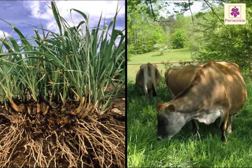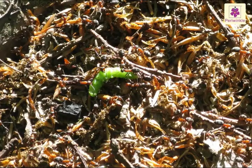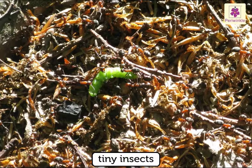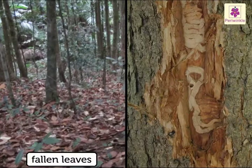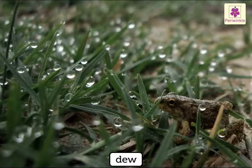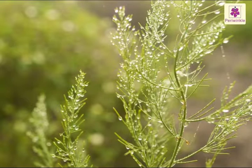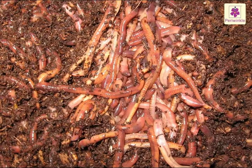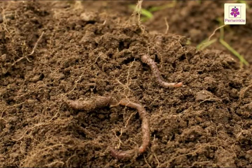But how does the ground continue to stay nutrient-rich when so many plants and animals draw their food from it? The forest floor is full of tiny insects, not even visible to the naked eye. These feed on the fallen leaves and the dead wood. Due to the early morning dew, the leaves and twigs dampen and become soft. The bacteria breaks this down further into humus, which is a natural fertilizer. This way, the nutrients are returned back to the soil.